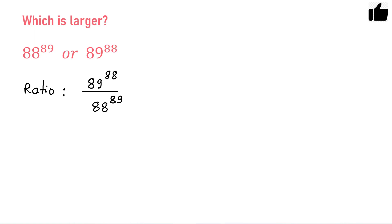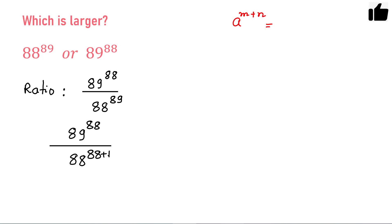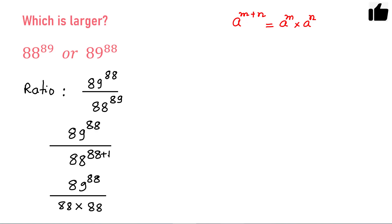Now let us simplify a little bit. We have 89 raised to the power 88 in the numerator, and in the denominator we can write 88 raised to the power 88 plus 1. Using the rule of exponents — a raised to the power m plus n equals a raised to the power m times a raised to the power n — we can rewrite the denominator as 88 times 88 raised to the power 88.